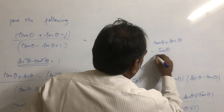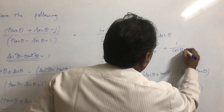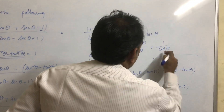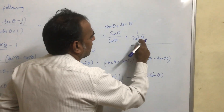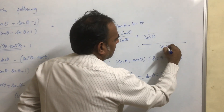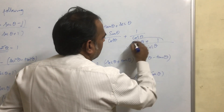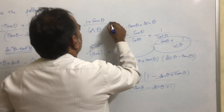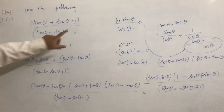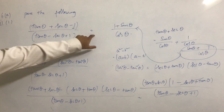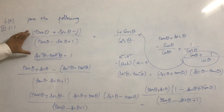After cancellation, we are left with tan θ + sec θ. Writing tan θ as sin θ / cos θ and sec θ as 1 / cos θ, the common denominator is cos θ. So the result is (sin θ + 1) / cos θ, which equals (1 + sin θ) / cos θ. This proves that LHS = RHS.